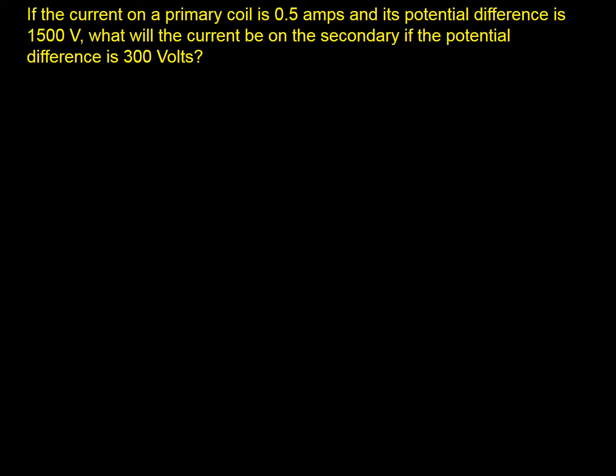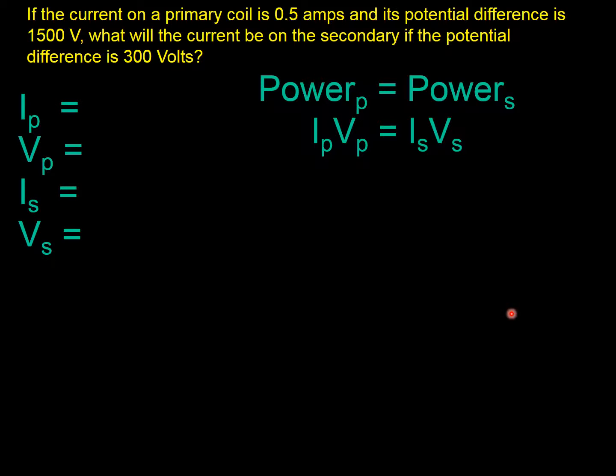Let's have another go. Here is another one, and those are the equations that we need. And let's work out what the numbers are. IP, do we know that? Yes, we do. The current on the primary is 0.5. The potential difference is 1500 volts. 1500 volts there.